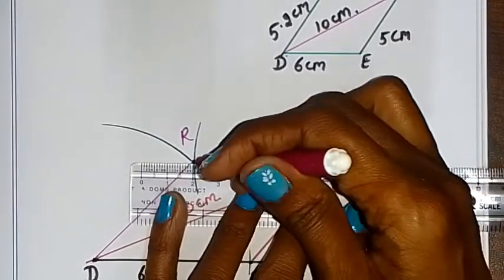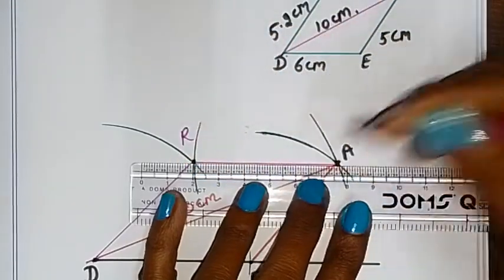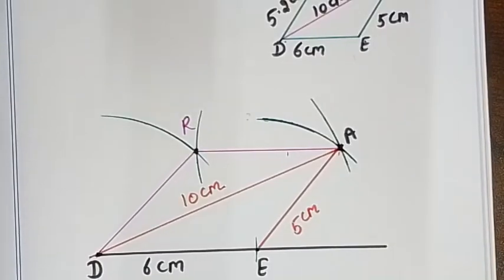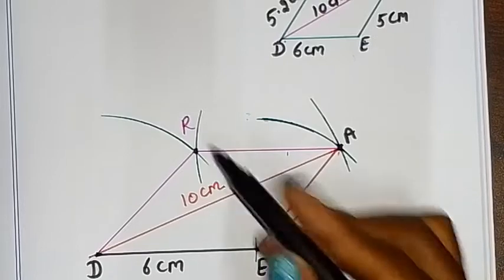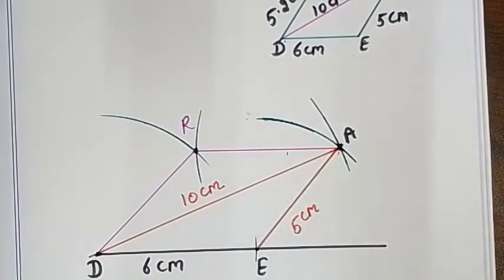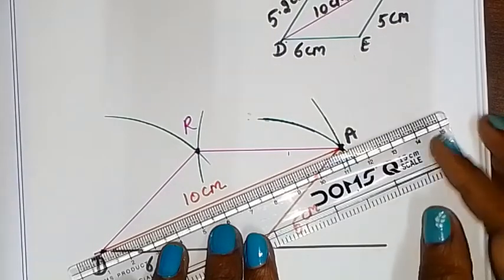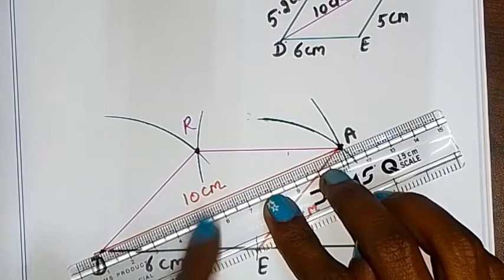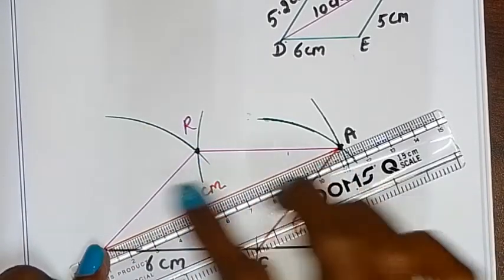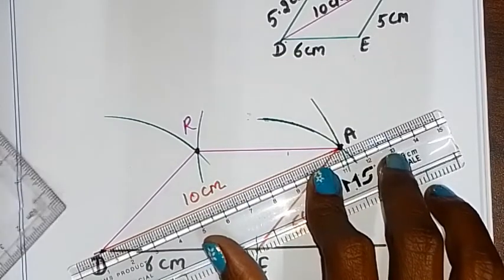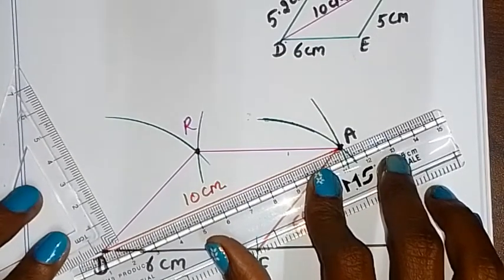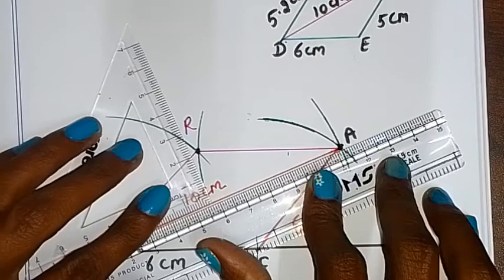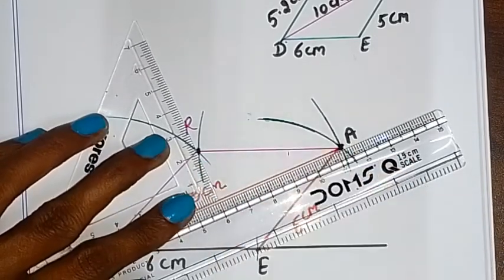Now we have the quadrilateral complete. We now have two triangles with a diagonal. We use a set square to draw a perpendicular line from each triangle to the diagonal. Move the set square into the correct position and join the line. The perpendicular measurement is H1. We now have height H1 marked.